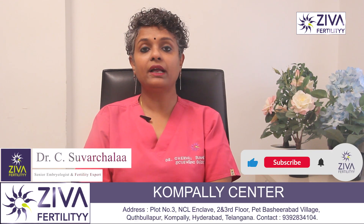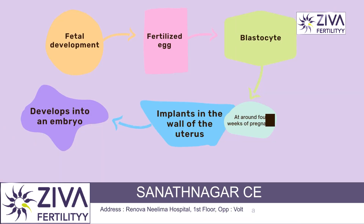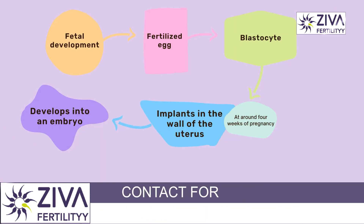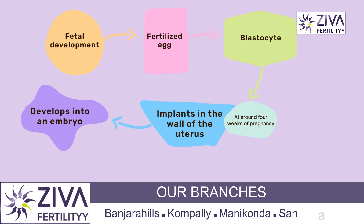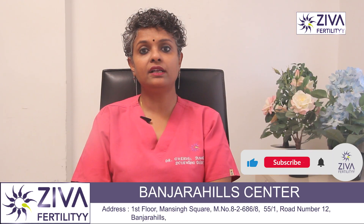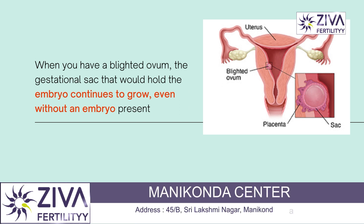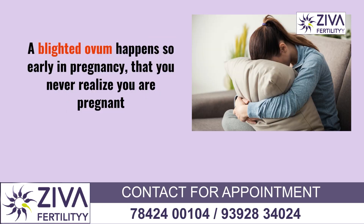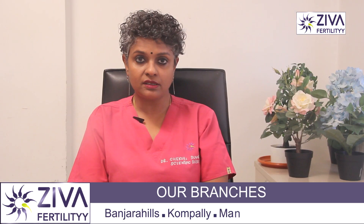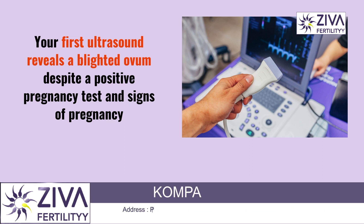So when does it happen? A blighted ovum causes an early miscarriage in the first trimester of pregnancy. During fetal development, a fertilized egg turns into a blastocyst, and that is what implants into the uterus. At around 4 weeks of pregnancy, this blastocyst implants in the wall of the uterus and develops into an embryo. When you have a blighted ovum, the gestational sac that would hold the embryo continues to grow even without an embryo present. A blighted ovum happens so early in pregnancy that you never realize you're pregnant. Sometimes you have a positive pregnancy test and signs of pregnancy only to discover a blighted ovum at the first ultrasound.